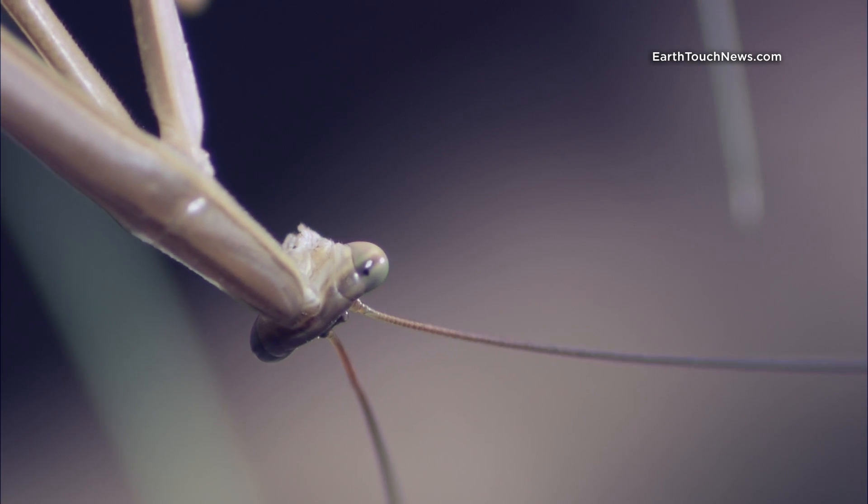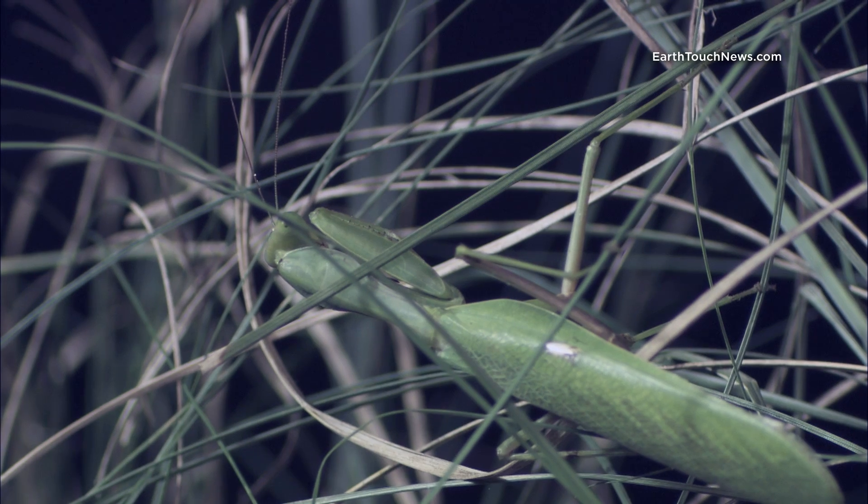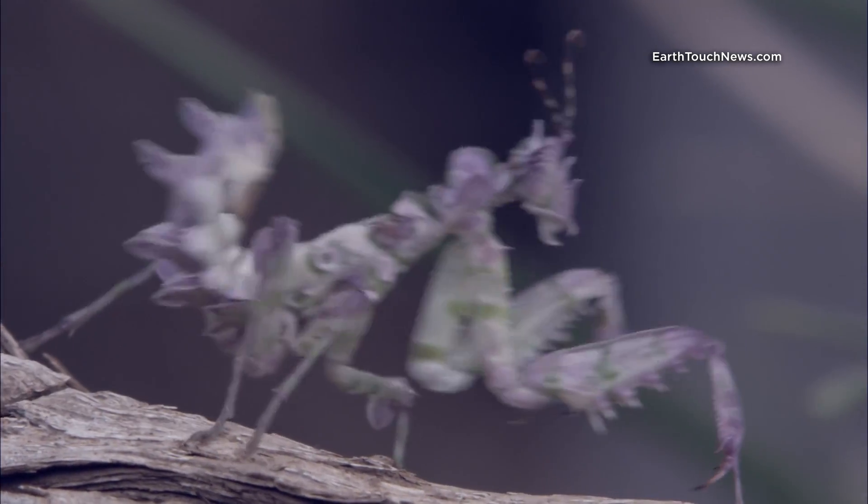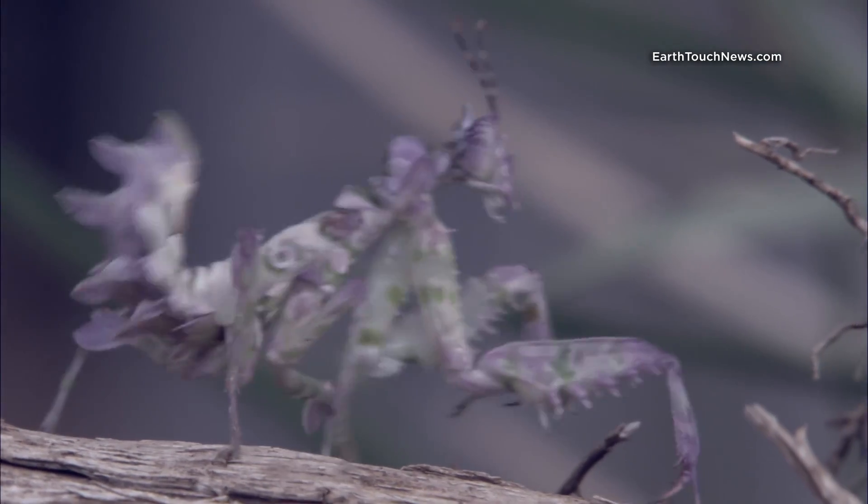Mantids disguise themselves as branches, grass, or flowers. This, of course, helps ensure their outstanding hunting hit rates. It also helps them avoid being eaten themselves.